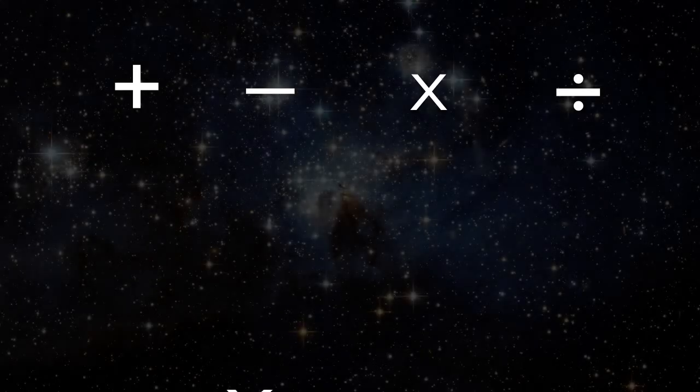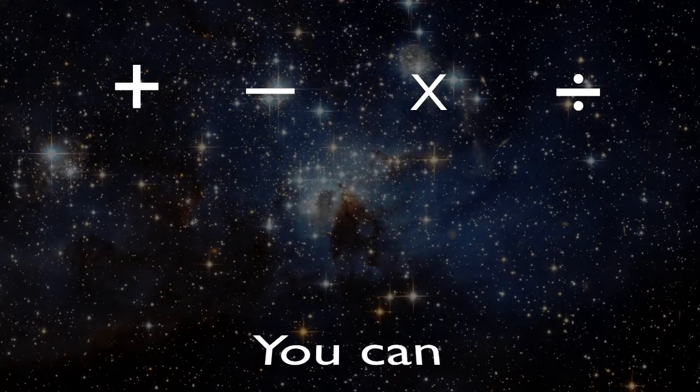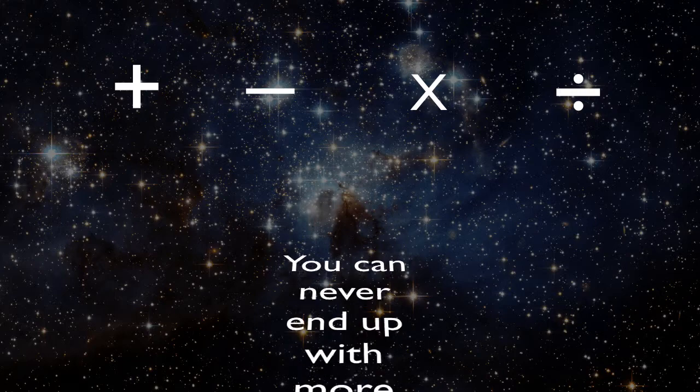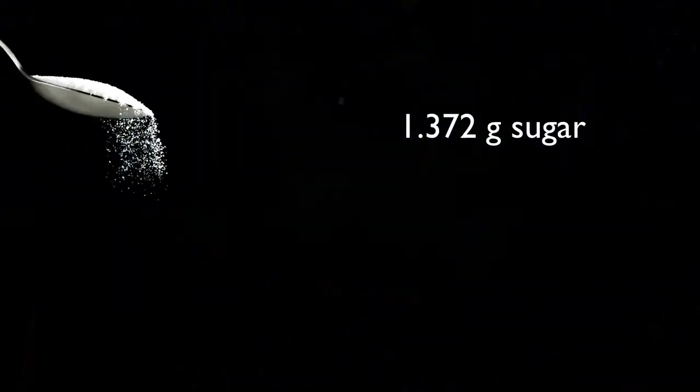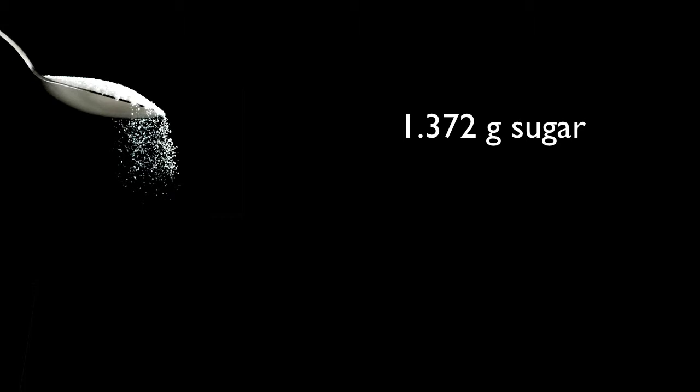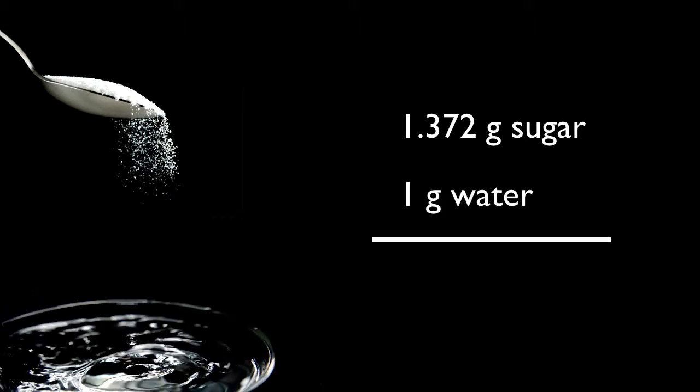There are some important rules for how we add, subtract, multiply, and divide numbers with significant figures. Briefly, you can never end up with more significant figures than you started with. If I add 1.372 grams of sugar to 1 gram of water, what's the total mass of the mixture? Is it 2.372 grams?